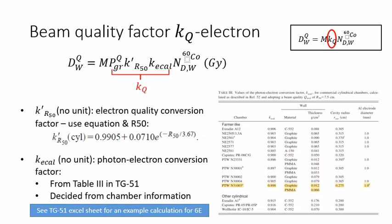The next factor is KR50'. It also has no unit. It is the electron quality conversion factor. It uses the R50 value from the PDD scan, and uses this equation if we use the cylindrical chamber, and this other equation if we use TG51. This is an empirical equation.